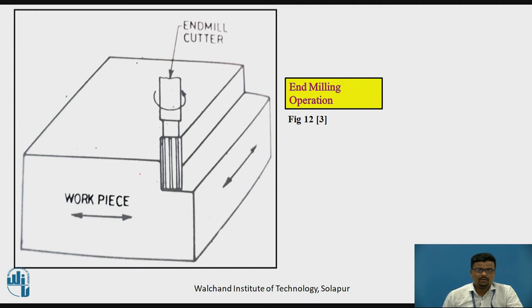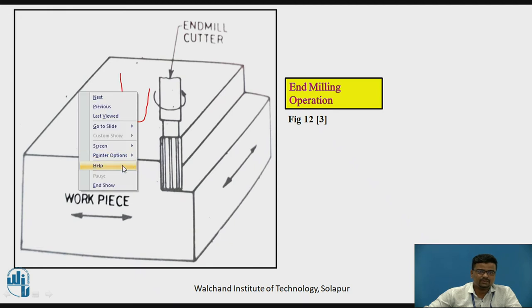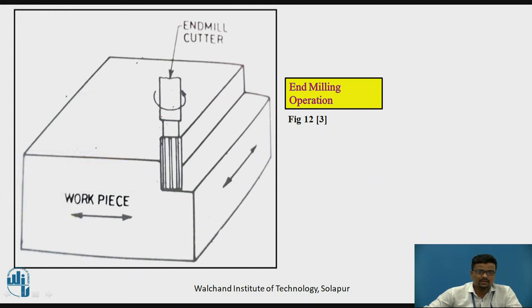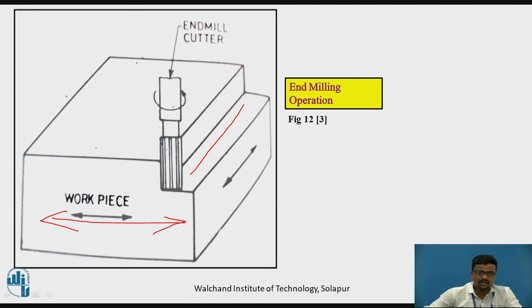For the end milling operation, at the side face or the end face of the workpiece, you want to provide the milling operation. The end mill cutter is used here. The workpiece feed is in the horizontal direction, and the cutting tool moves in the cutting direction.